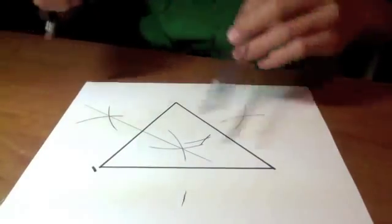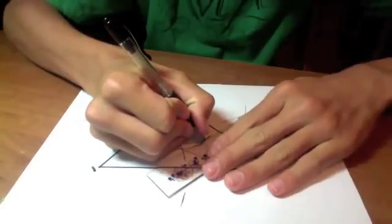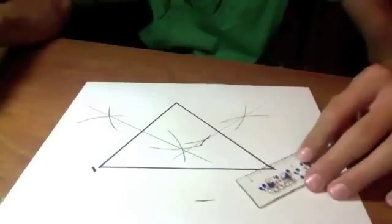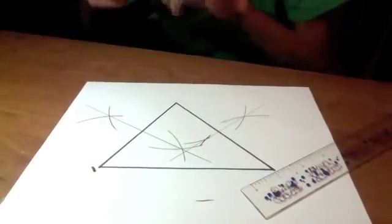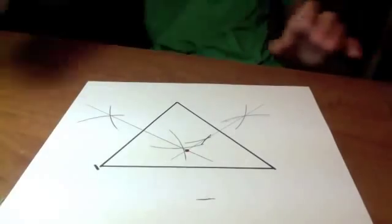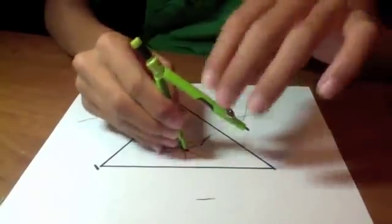The intersection of the two lines you have drawn is the center. From there, grab your compass and put the needle in the center and the lead on the corner of the triangle.